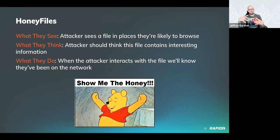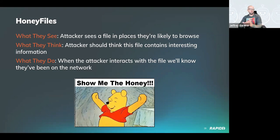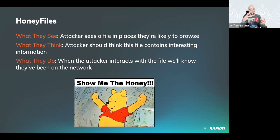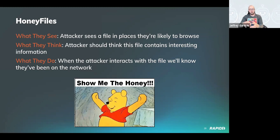Honey files — an attacker sees a file in a place they're likely to browse that looks like it contains interesting information, such as 'accounting.db,' 'passwords.txt,' or 'do not delete.pdf.' When the attacker interacts with that file, we'll know they're on the network.